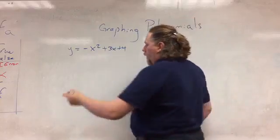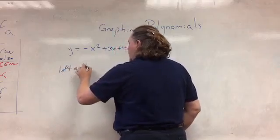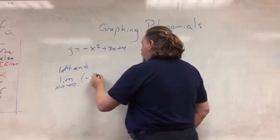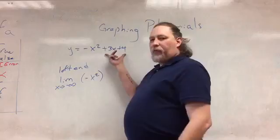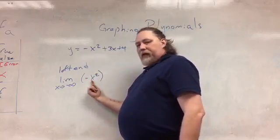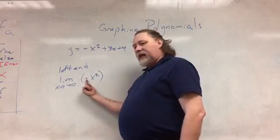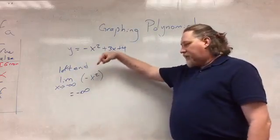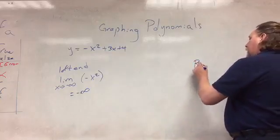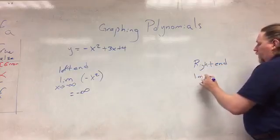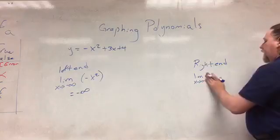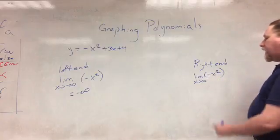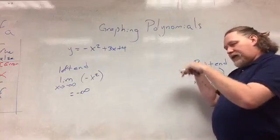I have y equals negative x squared plus 3x plus 4. First, I want to know what's happening on the left and the right. On the left, I take the limit as x goes toward negative infinity, concentrating on just the highest power term: negative x squared. The 3x and the 4 fall off because they can't compete with x squared. Squaring a negative makes it positive, but then times negative 1 gives negative infinity. So as I follow this graph to the left, it is heading downward. On the right, the limit as x heads toward positive infinity of negative x squared: a positive squared is positive, times a negative gives negative infinity. So as I follow this graph to the right, it will keep heading downward.